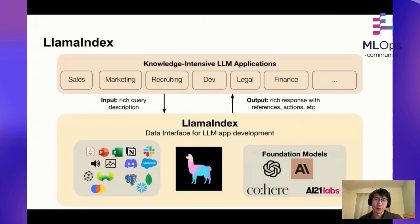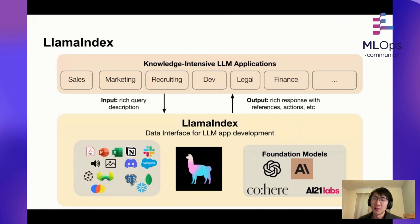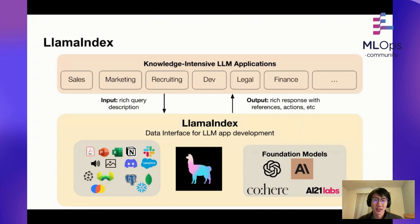This is basically what Llama Index's entire mission is focused on. Imagine you're building some sort of knowledge-intensive language model application — whether it's a sales tool, marketing tool, recruiting tool, and so on. Your input is going to be some rich query, either a simple question or a complex task. Llama Index itself is a central data interface for language model application development. We sit on top of your existing data sources or databases and manage the interaction between your data and your language model, returning a synthesized response with references, actions, and sources.